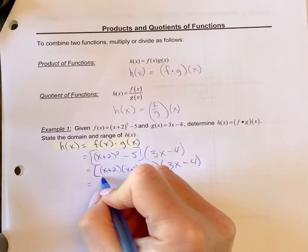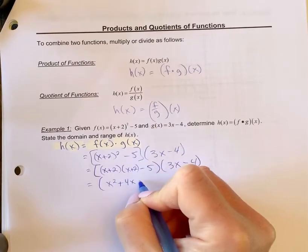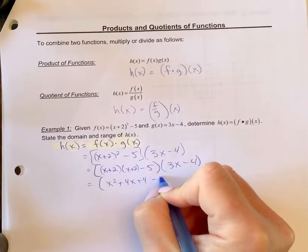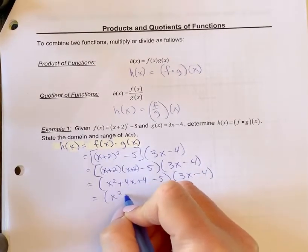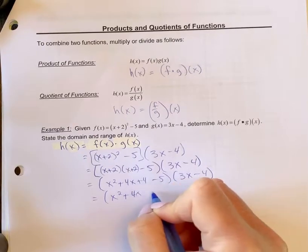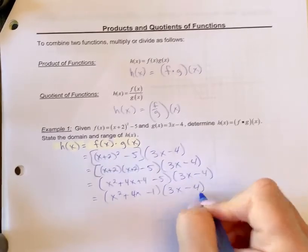So when we foil this out here, we're going to get x squared plus 4x plus 4. We have our minus five in here still and 3x minus 4. You have x squared plus 4x minus 1 times 3x minus 4.